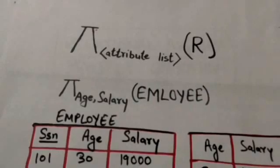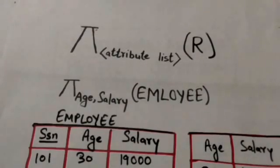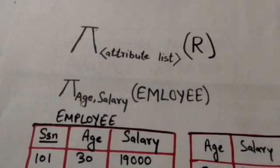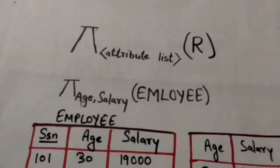The attribute list is the desired list of attributes of relation R. Only those attributes which are in this attribute list will appear in the result of the project operation. The result of a project operation is a relation, and since a relation is a set of tuples, any duplicate tuples are eliminated.